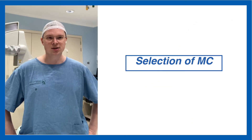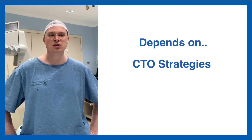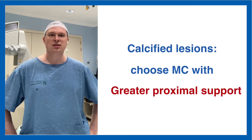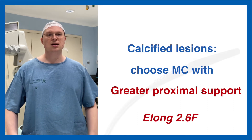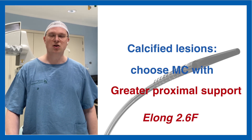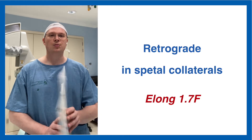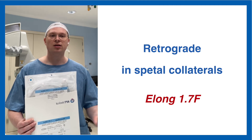Microcatheter selection depends on the CTO characteristics and the interventionalist's expertise. However, some features of the revascularization strategy and the CTO anatomy guide the microcatheter choice. For example, there are microcatheters that allow greater proximal support for calcified lesions, such as the ELONG 2.6 French, or on the other hand, the ELONG 1.7 French, that I'm rolling right now, is a better choice for crossing septals in the retrograde technique.